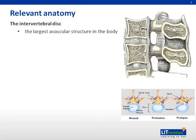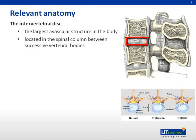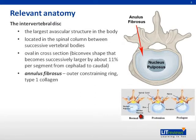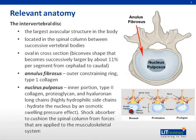The intervertebral disc is the largest avascular structure in the body, located in the spinal column between successive vertebral bodies. It is oval in cross-section, biconvex in shape, and becomes successively larger by about 11% per segment from cephalad to caudal. The annulus fibrosus is an outer constraining ring primarily made up of type 1 collagen. The nucleus pulposus refers to the central portion of the disc, and is soft and jelly-like, made up of type 2 collagen, proteoglycan, and hyaluronan long chains.